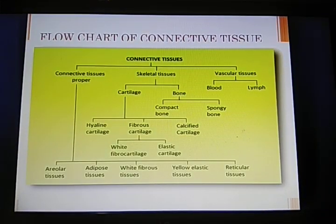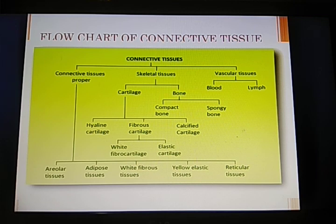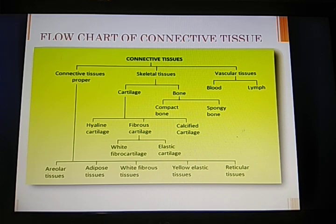We will see the next tissue — connective tissue. Connective tissue has basically three categories: connective tissue proper, skeletal connective tissue, and vascular connective tissue. In connective tissue proper we find areolar tissue, adipose tissue, white fibrous tissue, yellow elastic tissue, and reticular tissue. In skeletal tissue we find cartilage and bone. Cartilage is of three categories: hyaline cartilage, fibrous cartilage, and calcified cartilage. In bone we find compact bone and spongy bone. In vascular tissue we find blood and lymph.